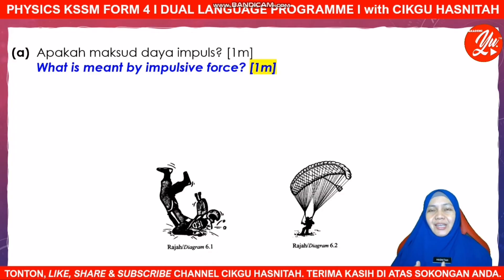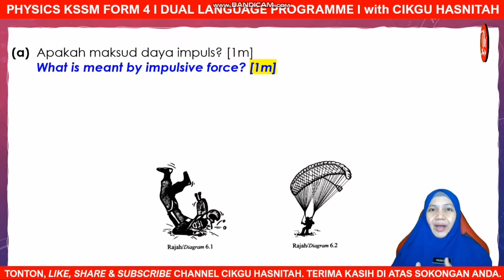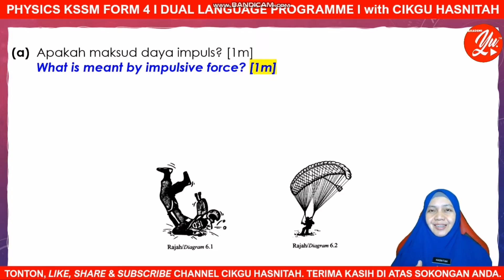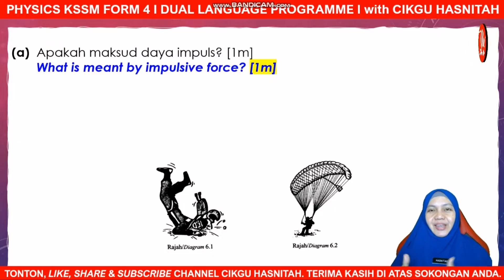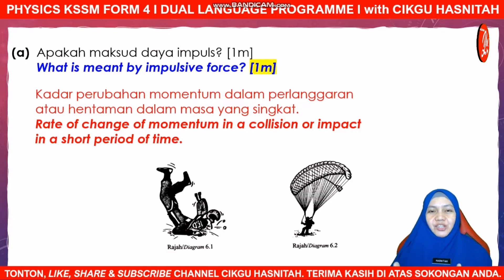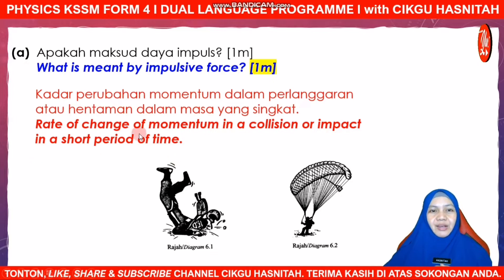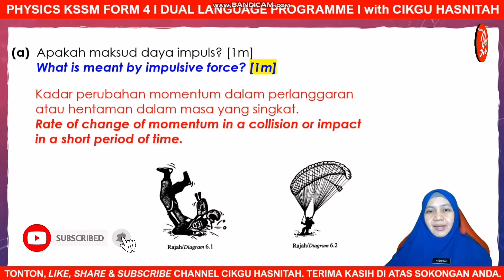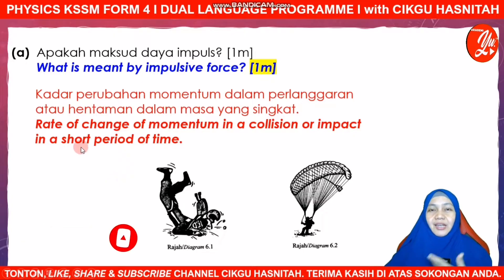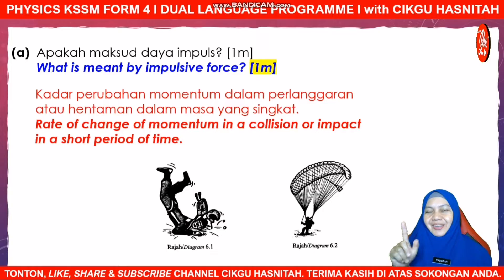Normally this essay question's first part begins with a definition of a concept. As written there: what is meant by impulsive force? One mark. Do you remember when we discussed content standard 2.7 on impulsive force? Impulsive force refers to the rate of change of momentum in a collision or impact which occurs in a short period of time. There are three keywords: rate of change of momentum, collision or impact, and short period of time. This will secure you your first mark.